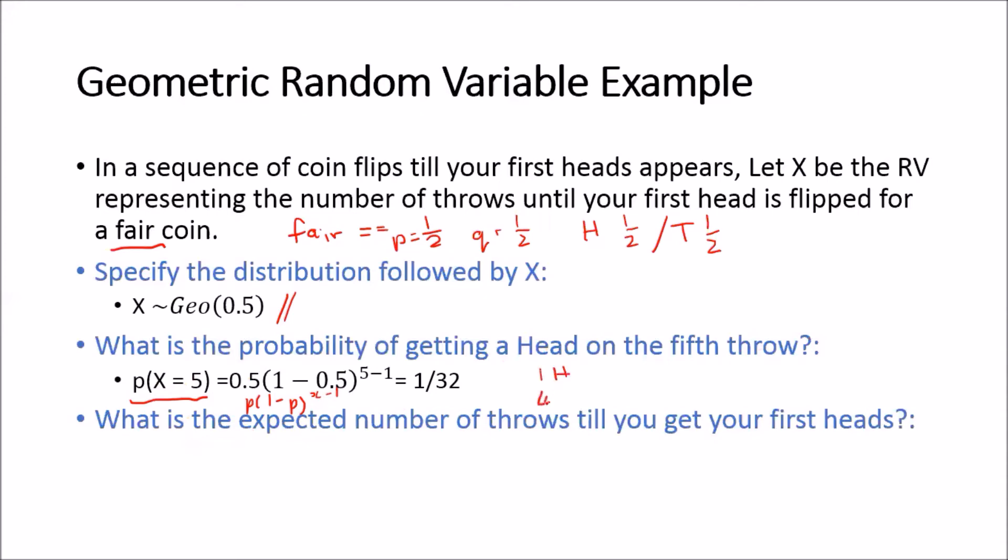So that's our p times (1 minus p) to the power x minus 1. And that will give us this answer of 1 over 32.